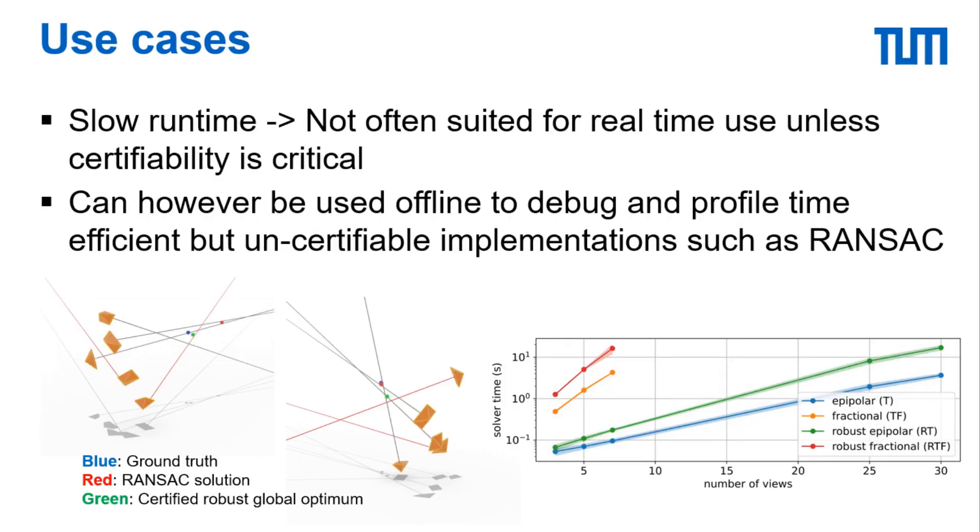Finally we'd like to comment on the use cases of semi-definite relaxations for robust triangulation and computer vision in general. Since the runtimes are slow, relaxation based approaches are typically not suited for real-time use unless the ability to certify global optimality is critical in the problem scenario. However, we argue that having tools for computing global optima can be very useful for debugging or profiling algorithms in an offline manner, for example, in order to establish the degree of sensitivity to local minima.